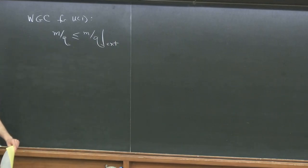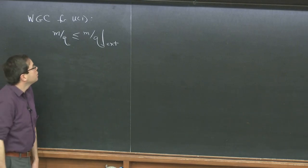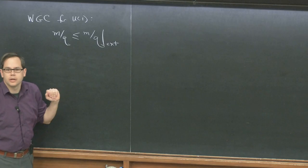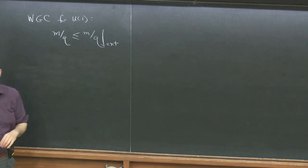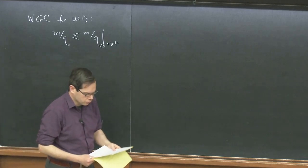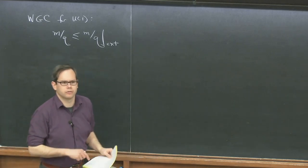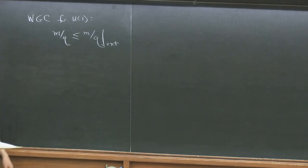So to remind you, yesterday we talked about the minimal version of the Weak Gravity Conjecture, which was that if I have a U(1) gauge theory interacting with gravity, there should be some particle whose mass-to-charge ratio is smaller than that of large extremal black holes. One question that was already asked yesterday is what happens if you have a larger gauge group than just U(1)?